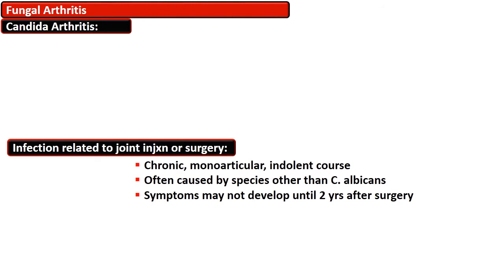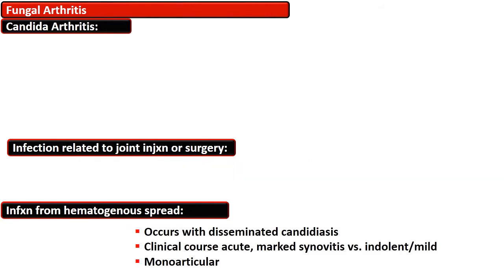Infections related to joint injection or surgery have a characteristic pattern: chronic monoarticular indolent course, often caused by species other than Candida albicans. Symptoms may not develop until 2 years after surgery. Infections from hematogenous spread occur with disseminated candidiasis.